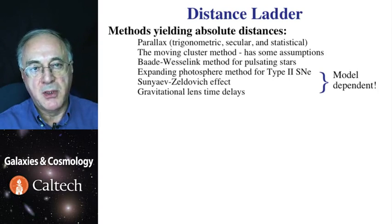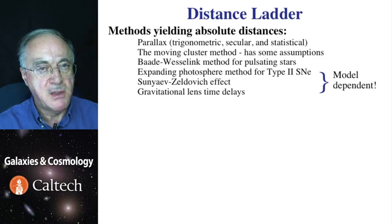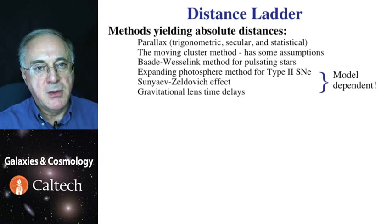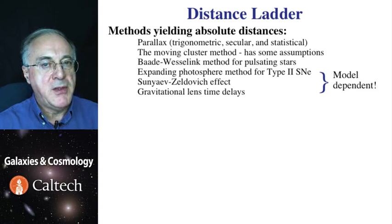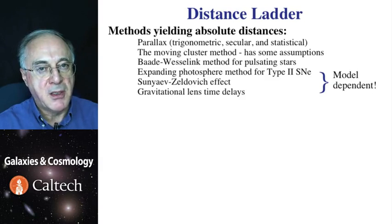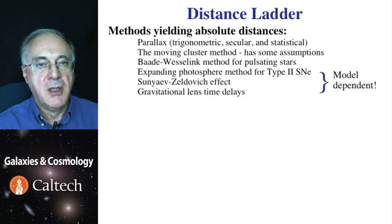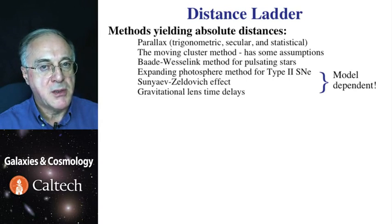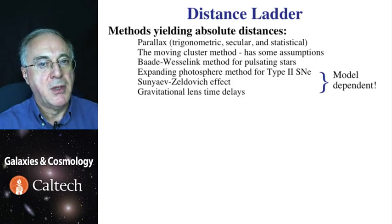However, we cannot measure parallaxes of stars more than about a kiloparsec from us, well within our own galaxy. There is the so-called moving cluster method, but that relies on statistics and certain assumptions. There is the so-called Baade-Wesselink method using pulsating stars, which also makes assumptions about stellar atmospheres. Very similar is the expanding photosphere method for supernovae, which requires non-trivial assumptions about the physics of an exploding star. Pushing further into Hubble flow, two important methods come in: one based on the Sunyaev-Zeldovich effect, measuring distances to clusters using CMB and X-ray observations, and the other using gravitational lens time delays.